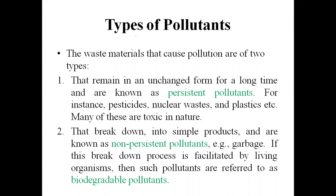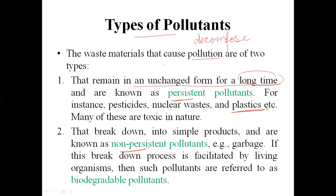Types of pollutants: waste materials that cause pollution are of two types — persistent and non-persistent. Persistent pollutants remain in an unchanged form for a long time; they do not decompose. Examples include plastic and nuclear waste. These are toxic and dangerous.